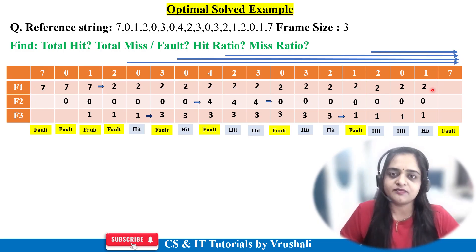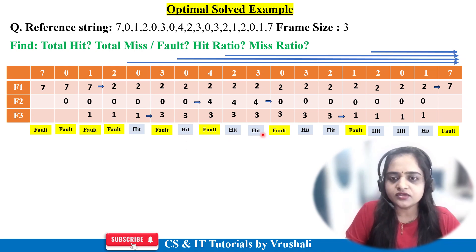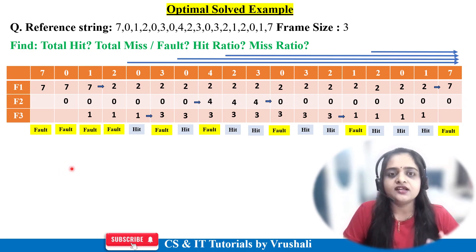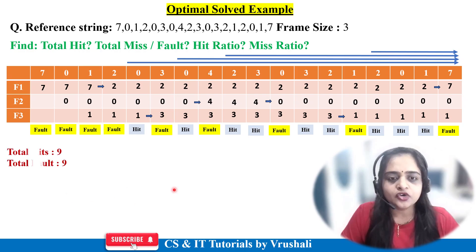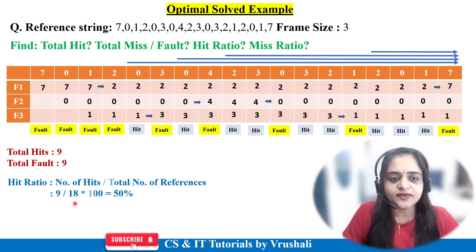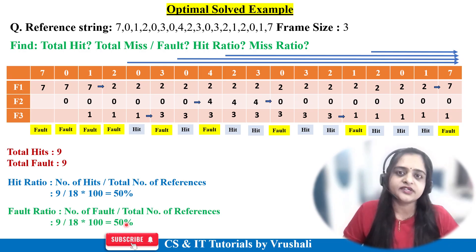So in this way you solve the example — just replace the page with the future one. Now counting hits and faults: total hits are 9, and total faults are also 9. To find the hit ratio, the formula is number of hits divided by total number of references. Number of hits = 9, total references = 18, so 9 divided by 18 multiplied by 100 equals 50%. Therefore the fault ratio is also 50%. So hit ratio is 50% and miss ratio is 50%.